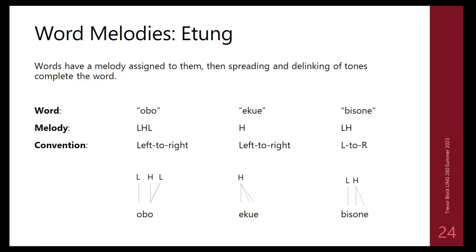Here's how tone assignment works systematically. For 'oboe' (two syllables: 'o' and 'boe'), if the word melody is low-high-low, we assign tones left-to-right one-to-one: 'o' gets low, 'boe' gets high, and the remaining low spreads onto that final syllable, giving it a contour tone (high-low). For 'ekue' (three syllables), a single high tone spreads across all three. For 'bisone' (three syllables), a low-high melody gives low to 'bi', high to 'so', and that high spreads to 'ne': low-high-high.